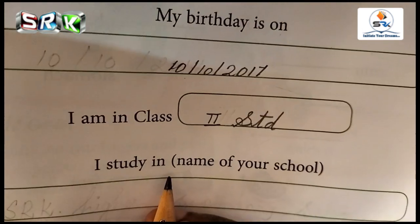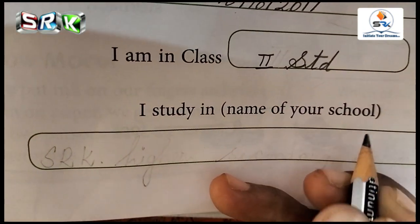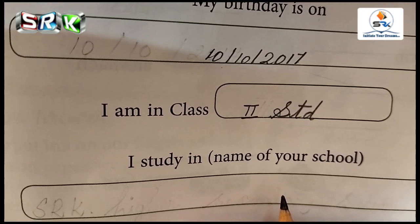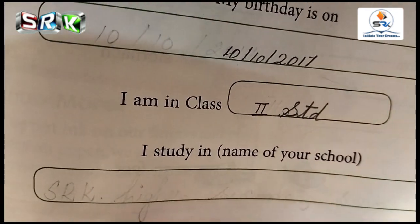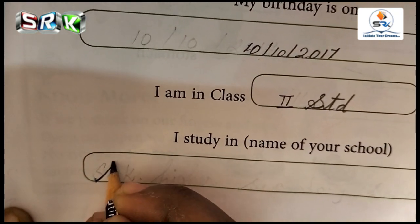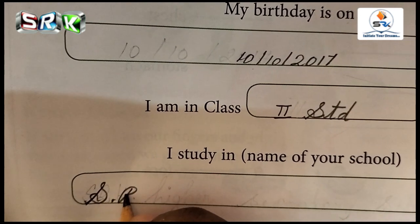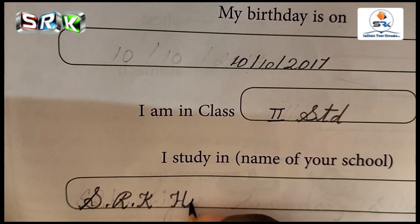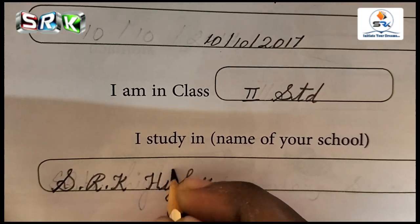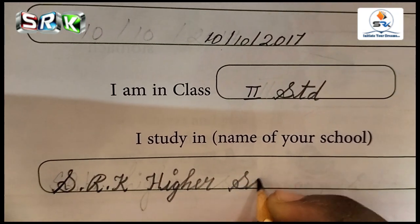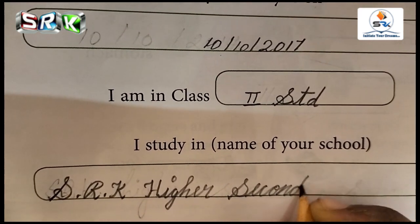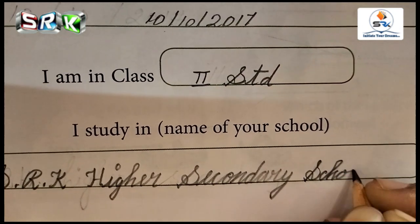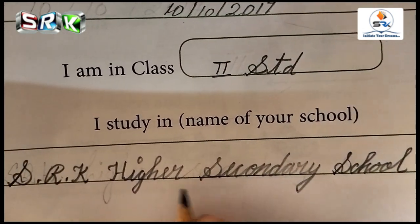Next: 'I am studying in' — write the name of your school. All of you are studying at SRK Higher Secondary School. Write your school name with a cursive first letter: S-R-K, H-I-G-H-E-R Secondary S-C-H-O-O-L — SRK Higher Secondary School.